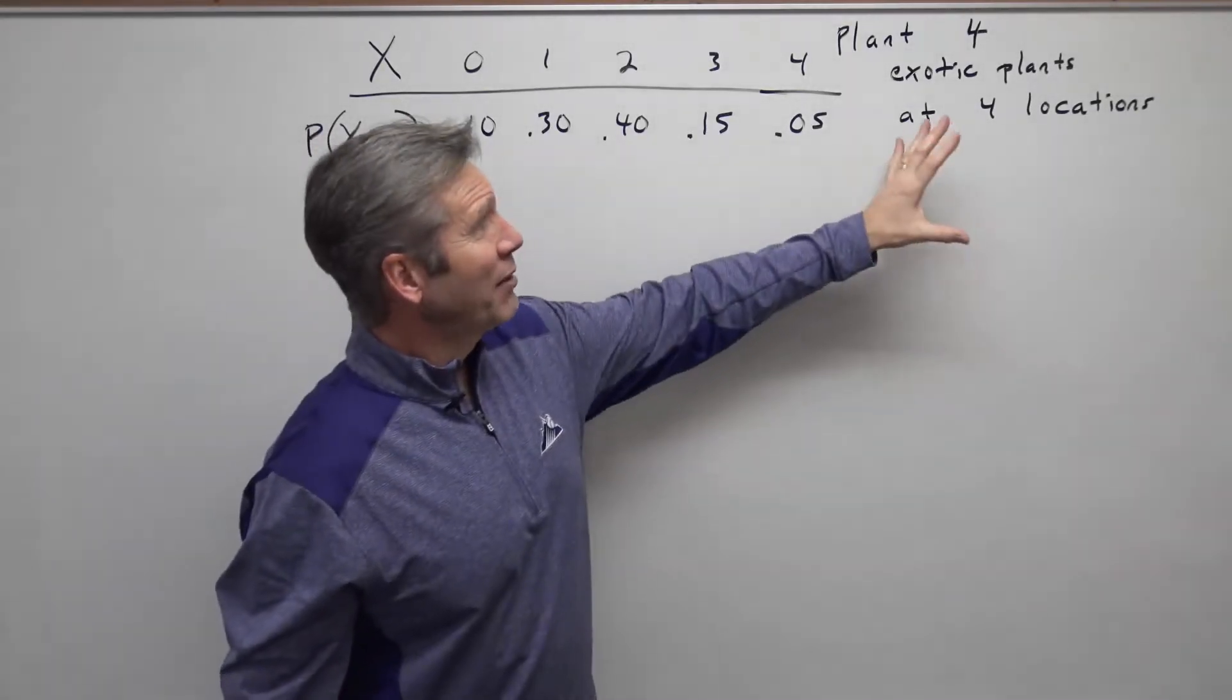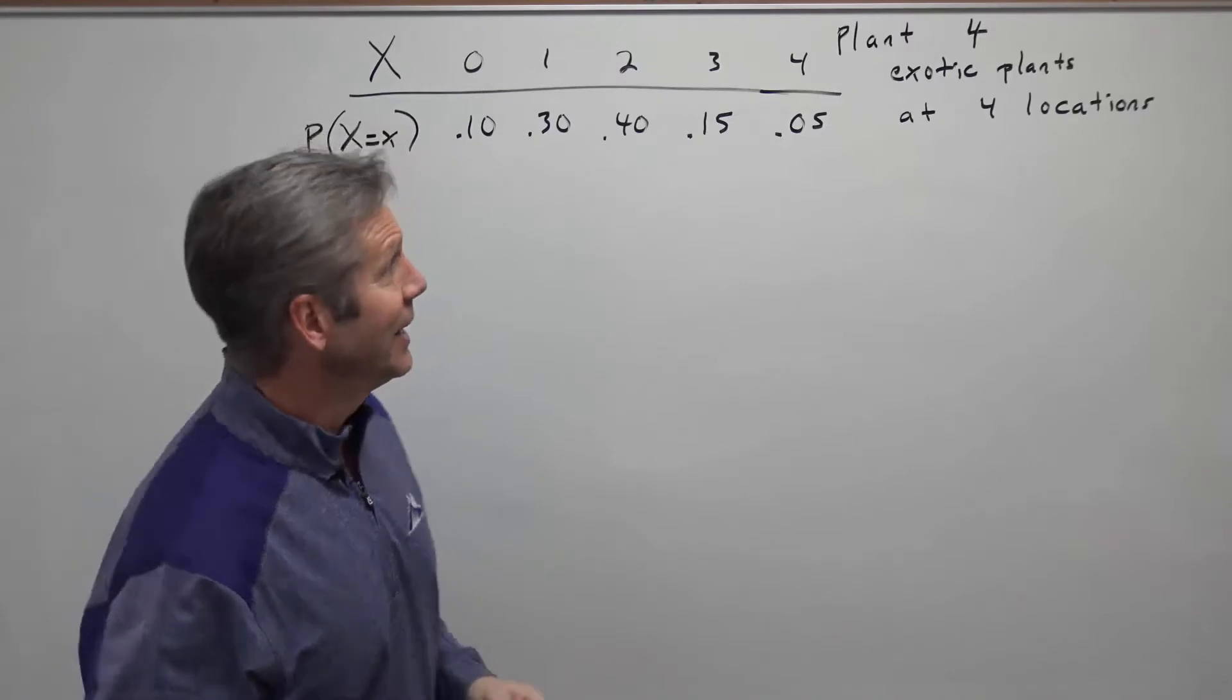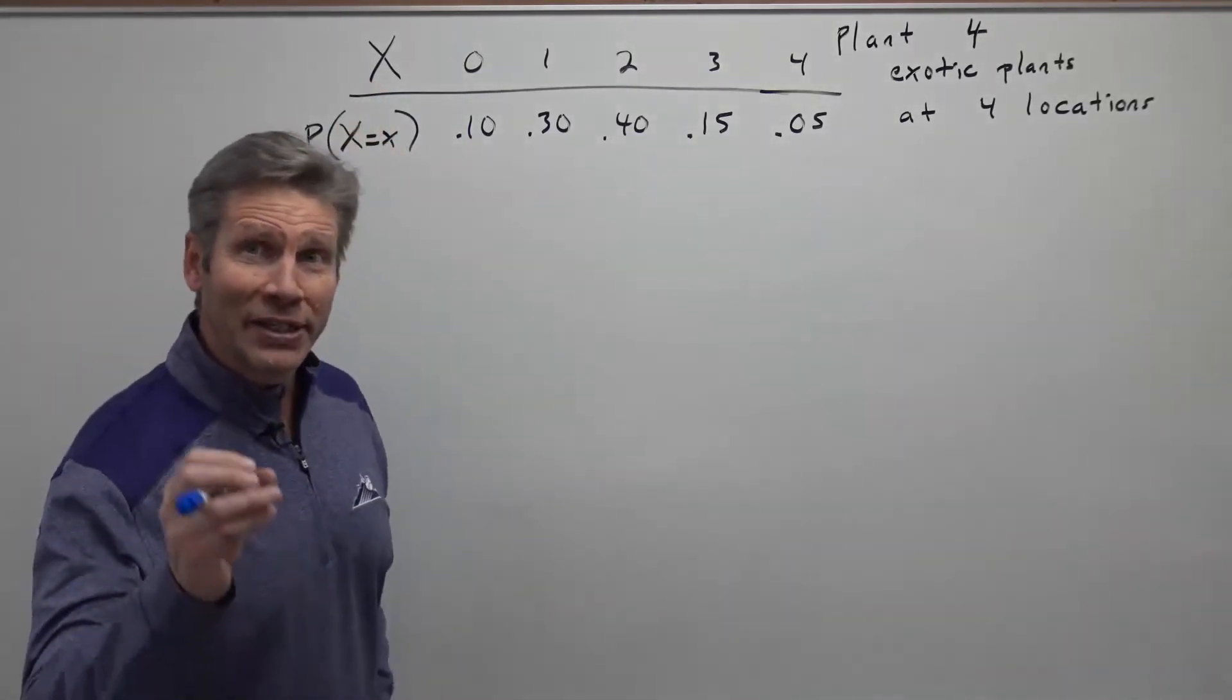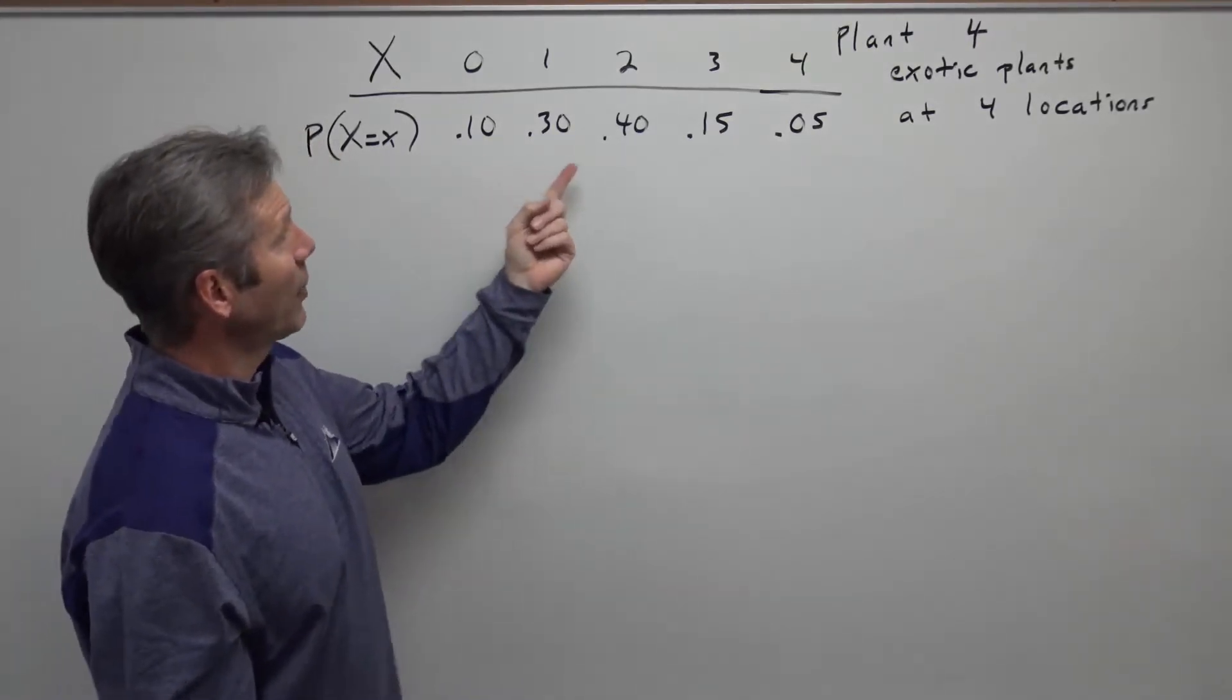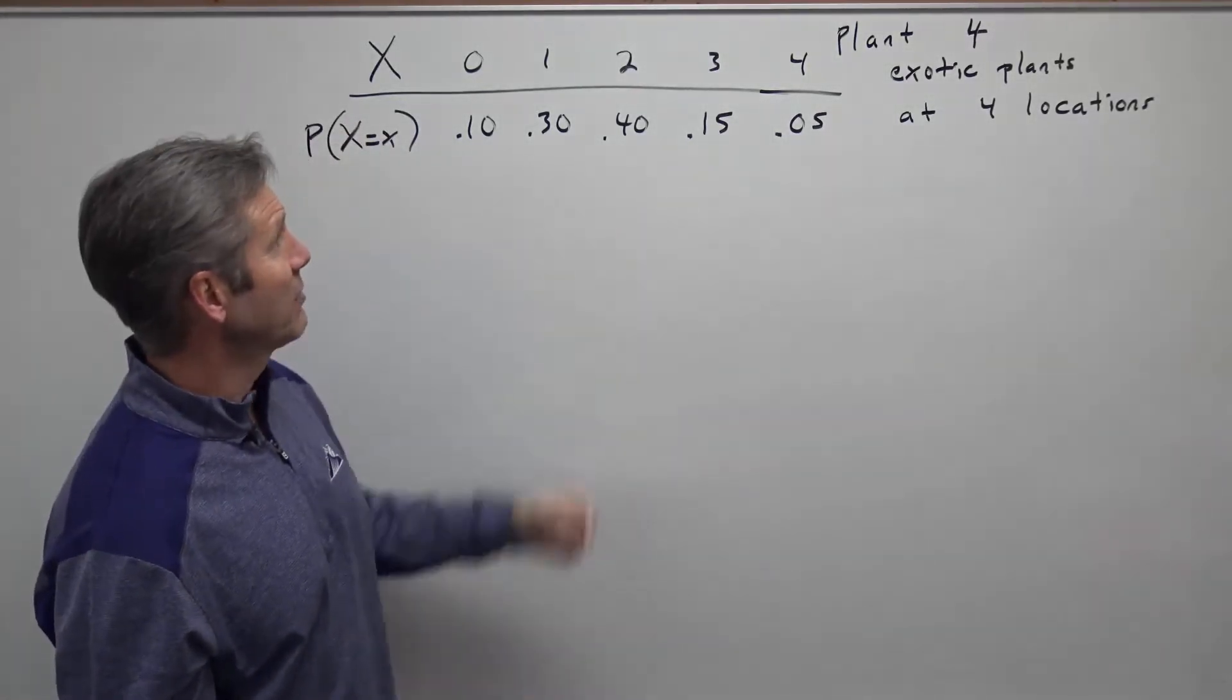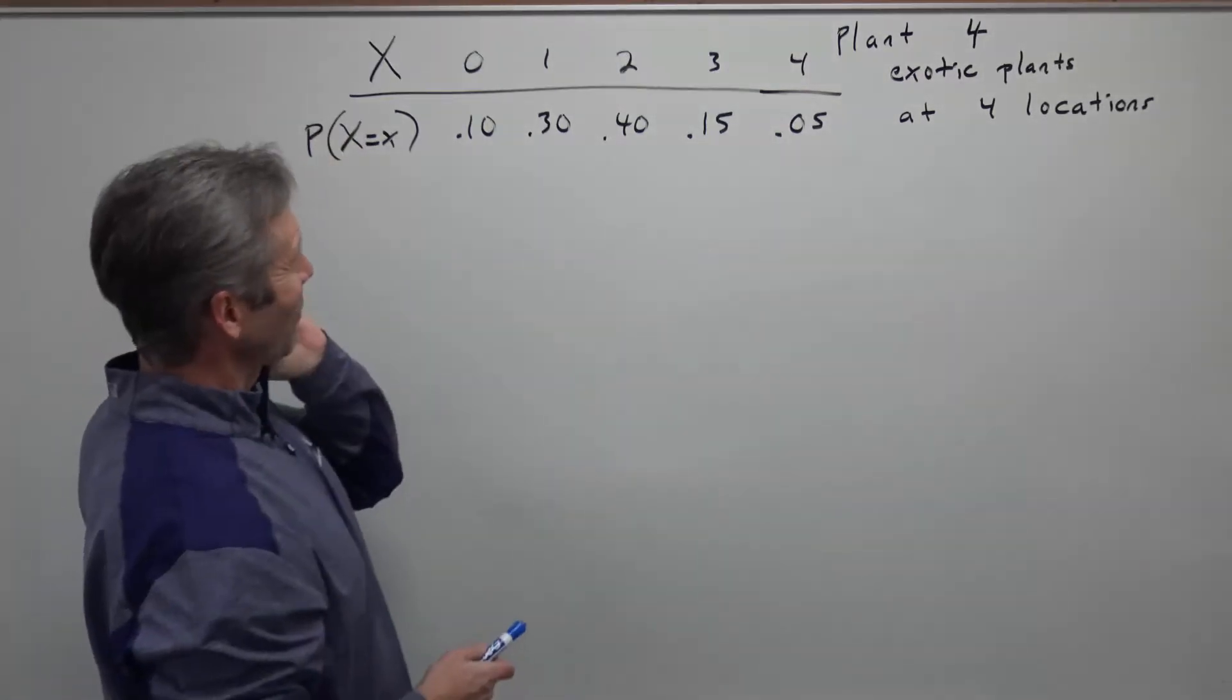Let's suppose you've planted four exotic plants at four different locations around town. X, the random variable, is how many of those four plants are going to survive and do well. The highest probability is that two out of the four plants will succeed. That's 40%. Notice all the probabilities add up to one.